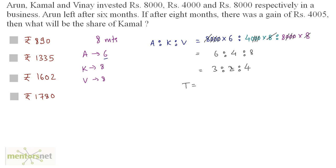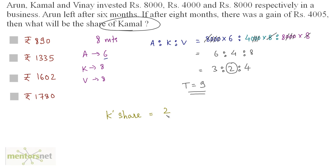Total parts of profit are 3 plus 2 plus 4 equals 9. We are asked for Kamal's share, which is 2 parts out of 9. So Kamal's profit share is 2 by 9 of 4,005, and when solved that equals 890. The answer is option A.